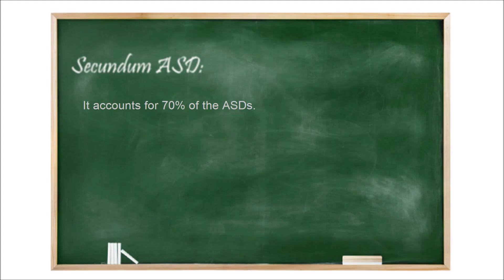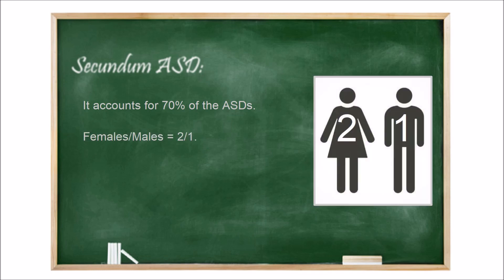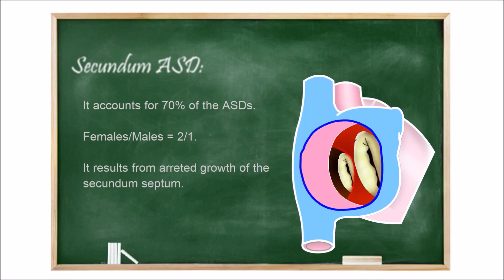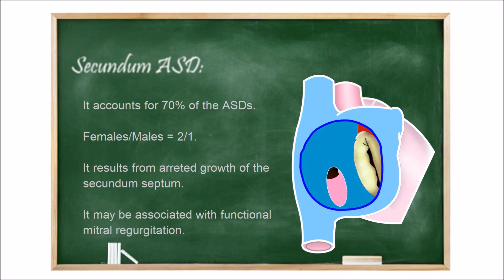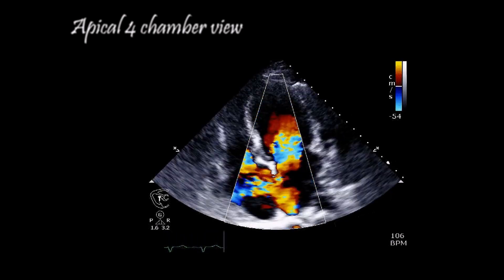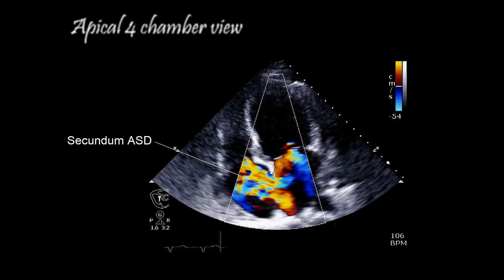Secundum atrial septal defects account for 70% of all atrial septal defects, and occur twice as often in females as in males. These types of defects are typically located within the fossa ovalis, and they can result from arrested growth of the septum secundum or excessive absorption of the septum primum.